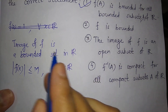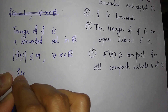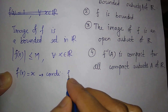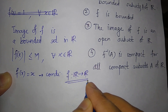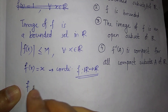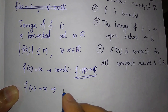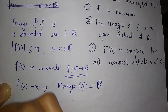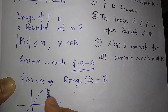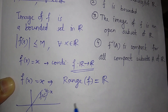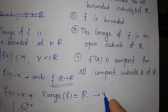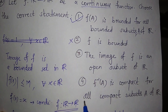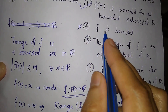For the second option, take f(x) = x. This is clearly a continuous function defined from R to R. The range of f(x) = x is all of R, because the graph is the line y = x, so the range is R, which is unbounded. So f is unbounded, and this is a counter-example showing the second statement is not true.